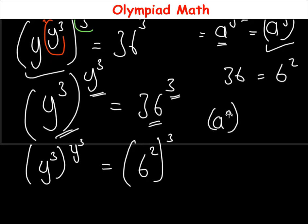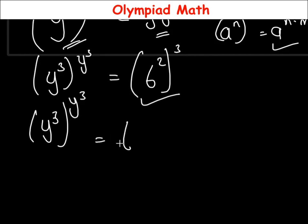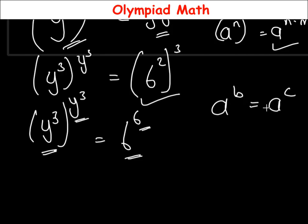Applying the identity that a raised to power n power of m equals a raised to power n times m: on the right side, 6 squared raised to power 3 gives 6 raised to power 2 times 3, which is 6 raised to power 6. Now on both sides, the base equals the power. Using the rule that if a raised to power b equals a raised to power c, then b equals c, we can compare the exponents.